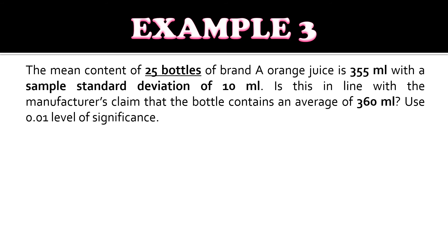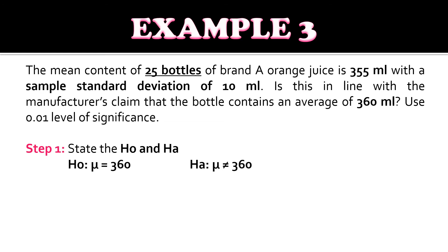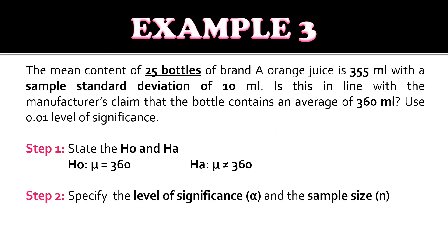For example three, the mean content of 25 bottles of Brand A orange juice is 355 ml with a sample standard deviation of 10 ml. Is this in line with the manufacturer's claim that the bottle contains an average of 360 ml? Use 0.01 level of significance. For step one, the null hypothesis is: mean equals 360, and the alternative is: mean is not equal to 360. For step two, the level of significance is 0.01 and the sample size is 25.